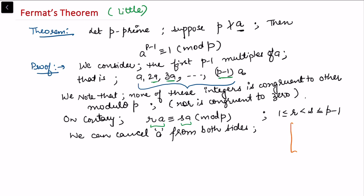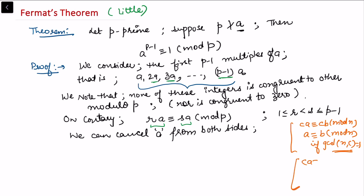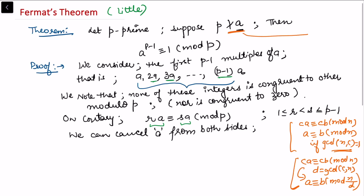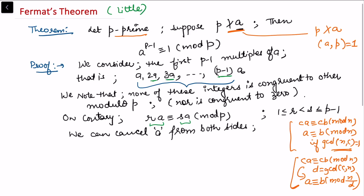From the cancellation property discussed earlier: if ca ≡ cb (mod n) and gcd(n, c) = 1, then a ≡ b (mod n). More generally, if d = gcd(c, n), we get a ≡ b (mod n/d). Since p is prime and p does not divide a, we have gcd(a, p) = 1, so we can cancel a to obtain r ≡ s (mod p).